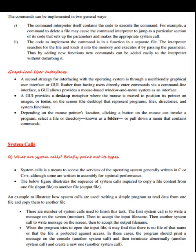Now let us see system calls. System calls are a means to access the services of the operating system, generally written in C or C++, although some are written in assembly for optimal performance. The figure illustrates the sequence of system calls required to copy file content from one input file to another output file — a simple program that reads data from one file and copies it to another.